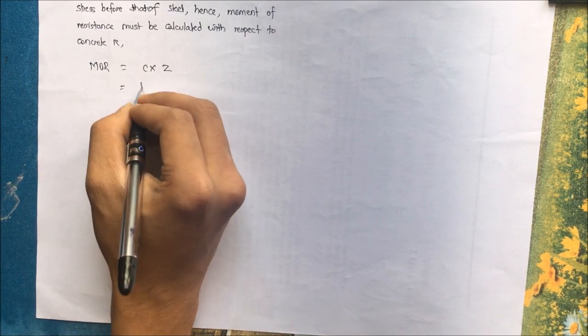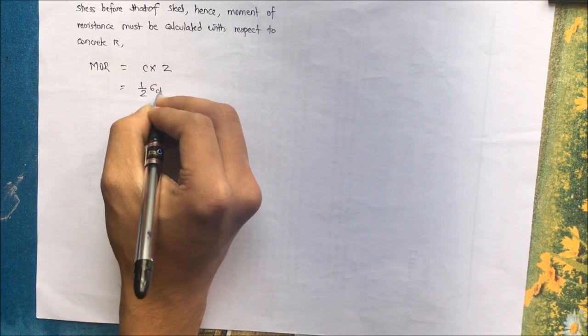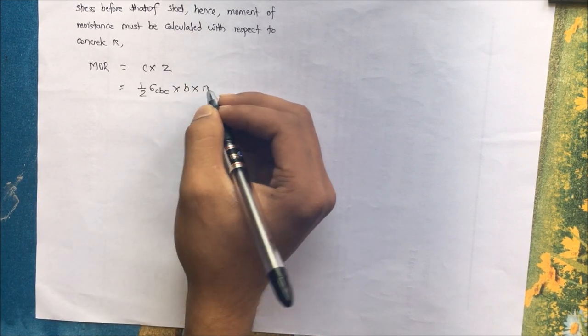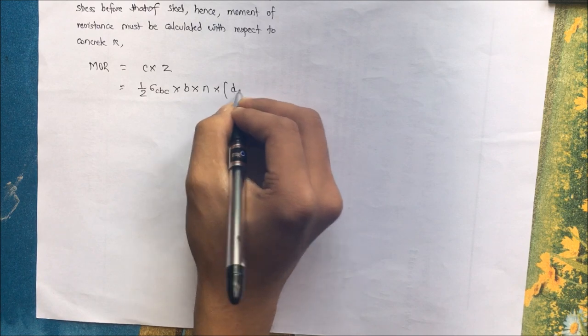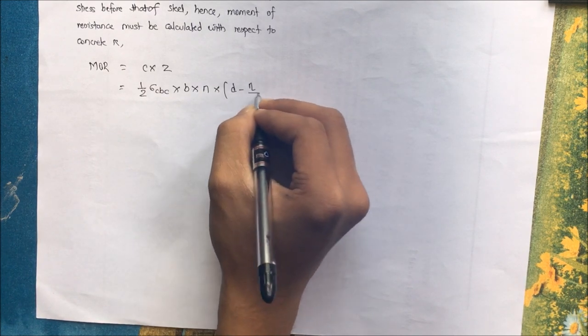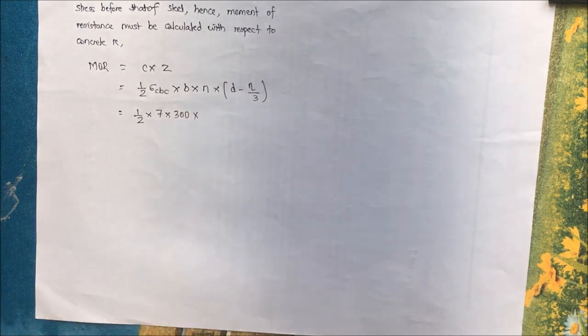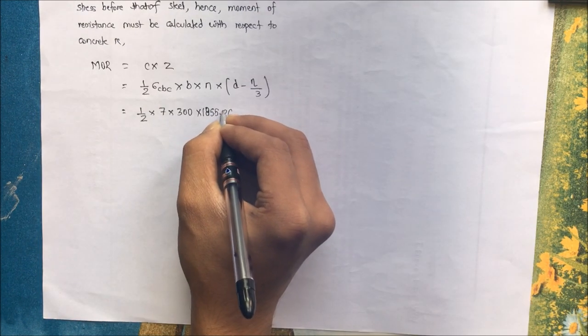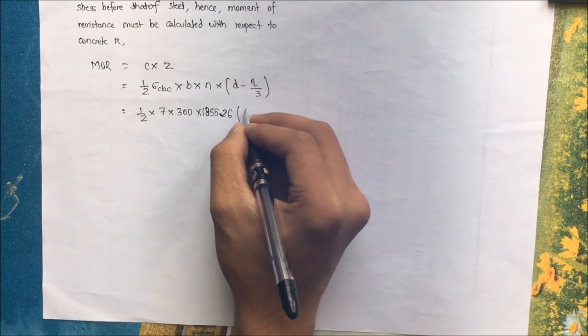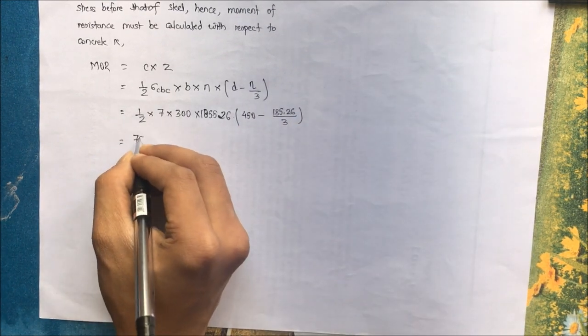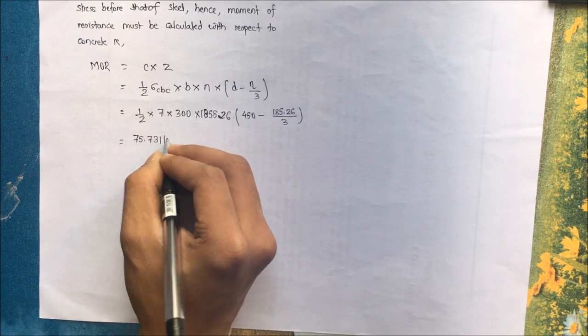1 by 2 into sigma cbc into B into N into D minus N by 3, D minus N by 3 being the lever arm, B into N being the area. 1 by 2 into 7 into 300 into 185.526 into 450 minus 185.526 by 3. We get this value of 75.731 kilonewton meter, so this is the maximum bending moment the beam can resist.